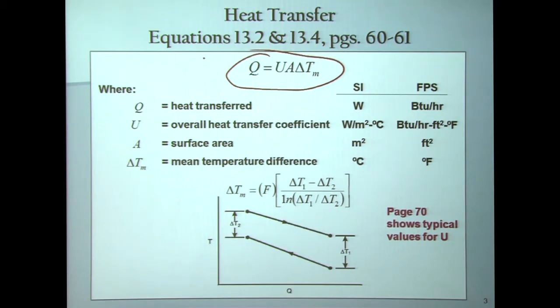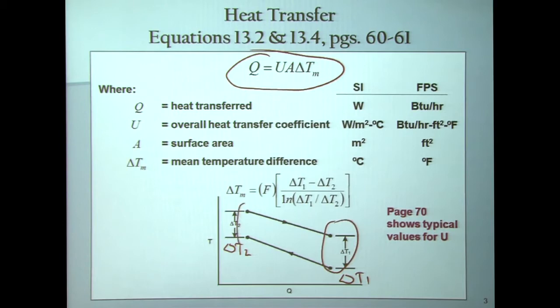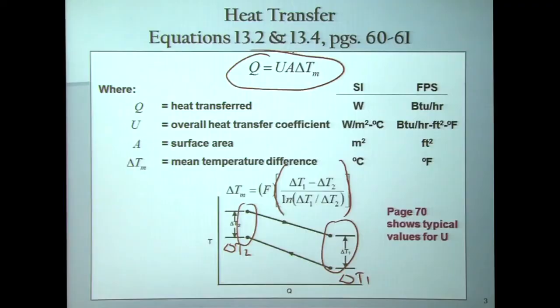The driving force is the temperature difference at the hot end of the exchanger — delta T2 — and the temperature difference at the cold end of the exchanger — delta T1. This is called the cold approach, and this is called the hot end approach. We use this log mean temperature difference in order to get an average temperature difference between the two streams. This is the guiding principle — this rate equation — to determine the area of a heat exchanger.